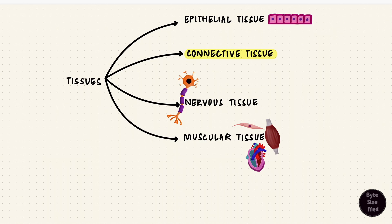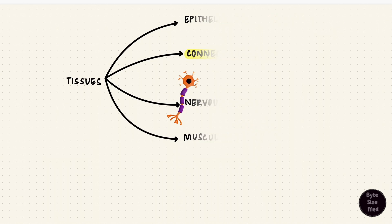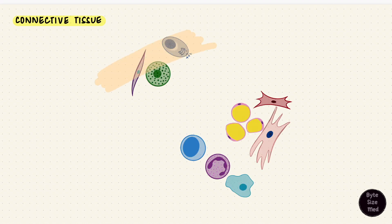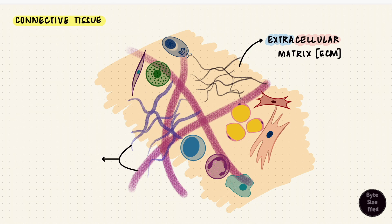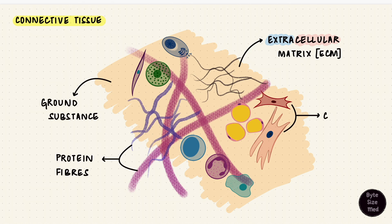Epithelial tissue has cells without much space between them. Connective tissue, on the other hand, has fewer cells and they've got spaces between them. That space is filled with a matrix called the extracellular matrix because it's outside the cells. This extracellular matrix is made up of proteins in the form of fibers and as ground substance. Thus connective tissue is a combination of three structures: cells, protein fibers, and ground substance.